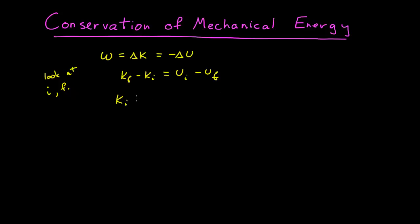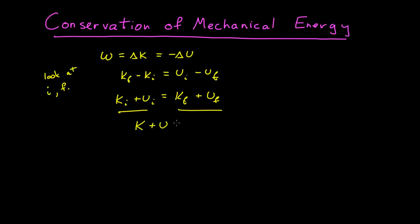we have our initial kinetic energy plus our initial potential energy is equal to our final kinetic plus our final potential energy. This is telling us that the sum of our kinetic and potential energy — because this holds for any two points in time — is a constant.